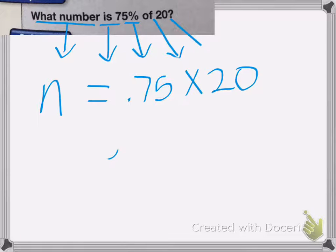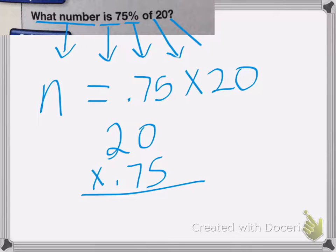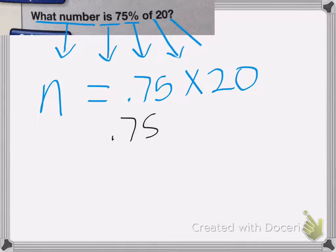75% now becomes a decimal, which is 0.75 of 20. So in this case, we're going to multiply these numbers. So we're going to do 20 times 0.75. 5 times 0 is, actually, it's easier to flip those around. So hold on just a second. We're going to do 0.75 times 20. And I'll show you why. So in this one, 0 times the top is just 0. So I can cancel that out and put my 0 placeholder.